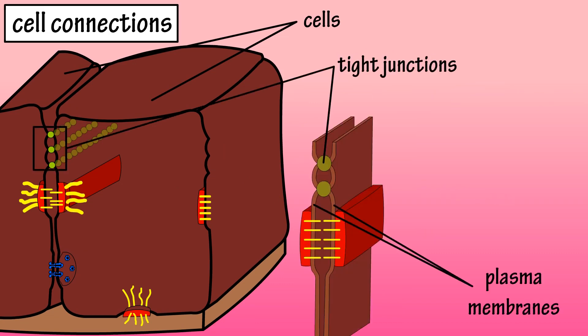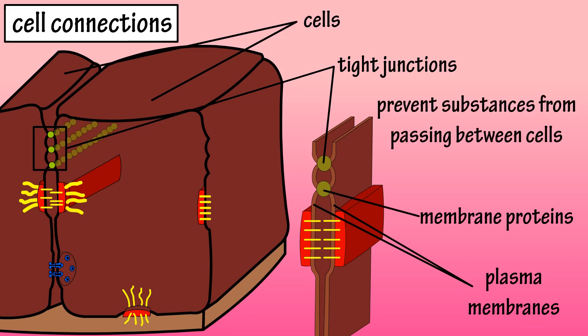Tight junctions are formed from plasma membrane proteins connecting one cell to another. They prevent substances from passing between the cells, requiring substances to pass through a cell. This allows for protection of other body structures.